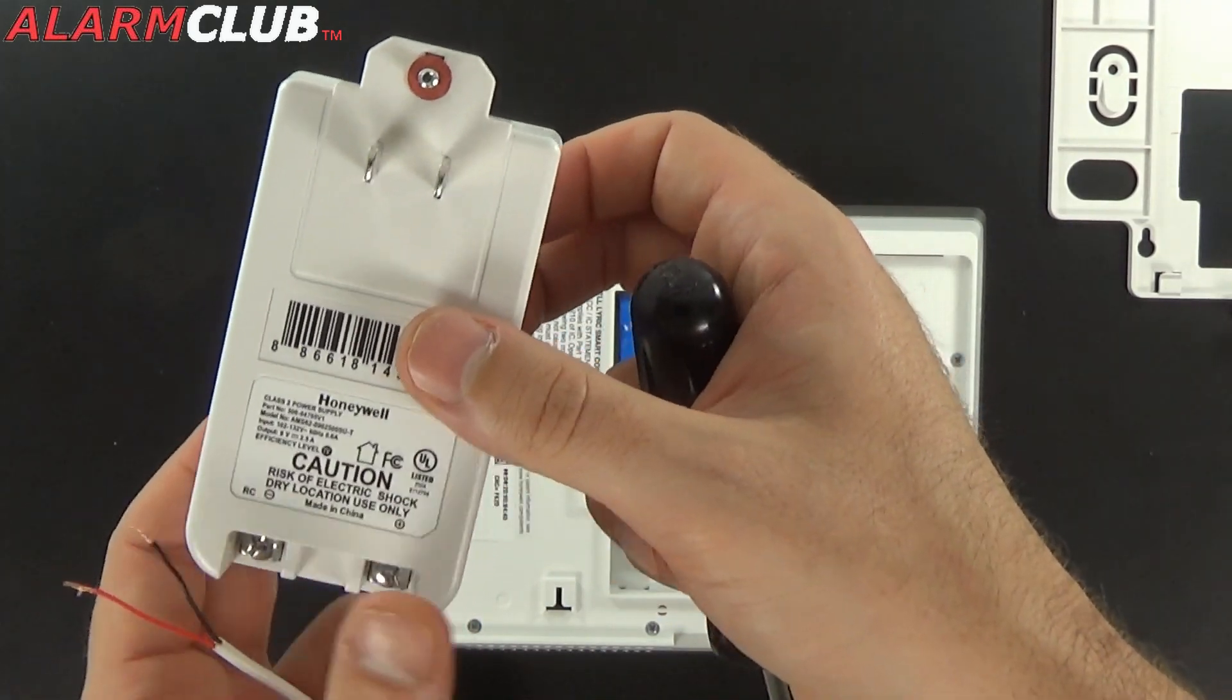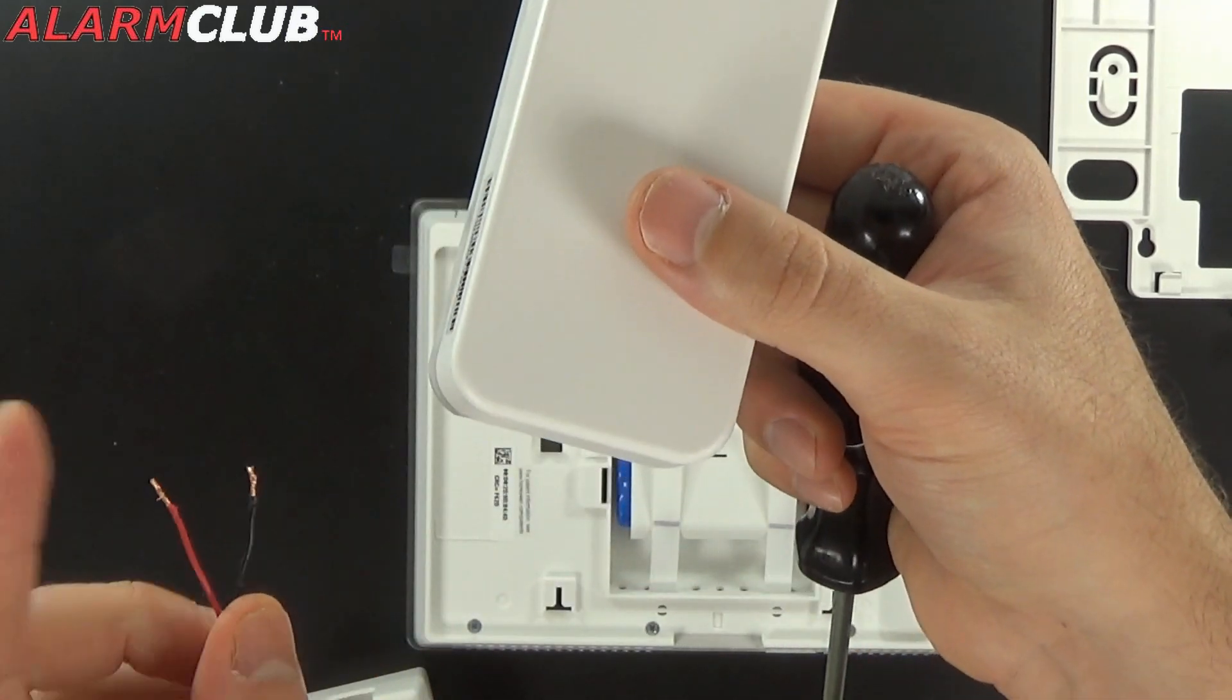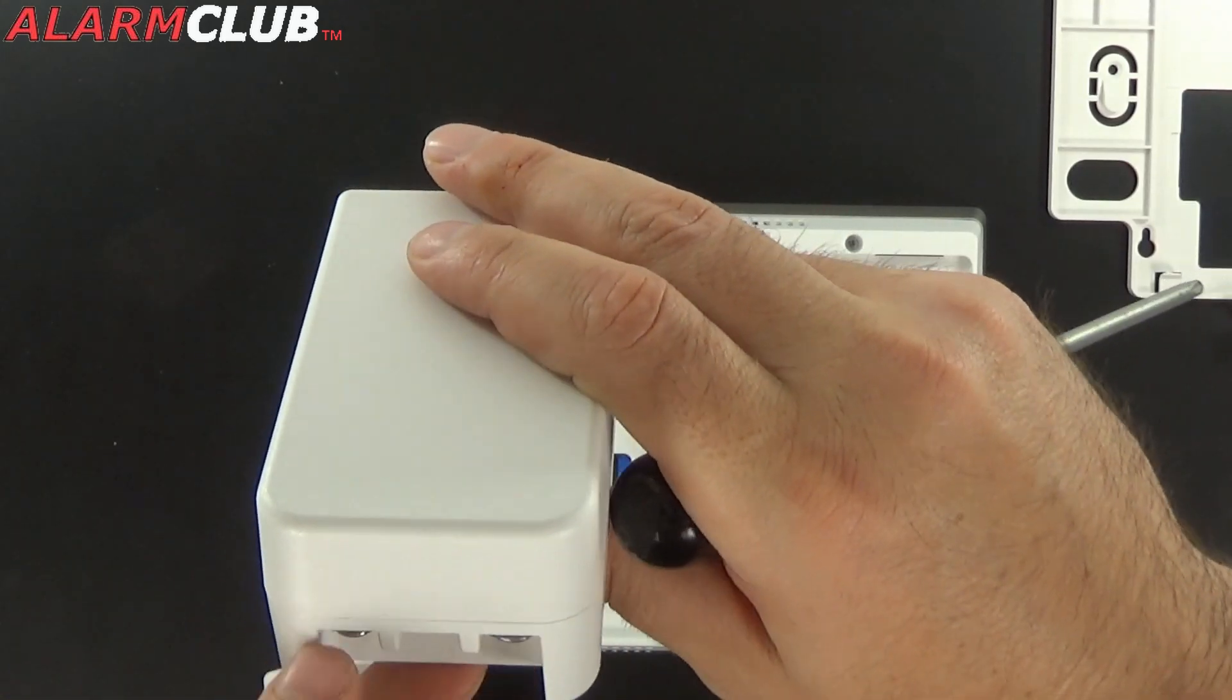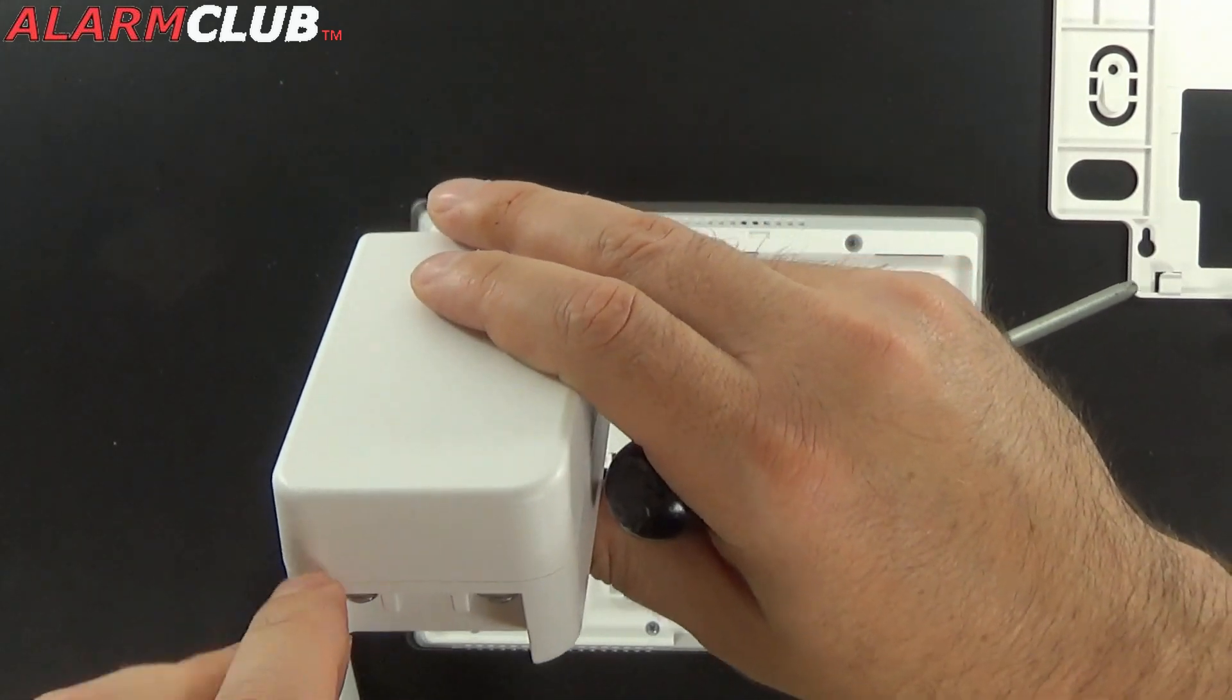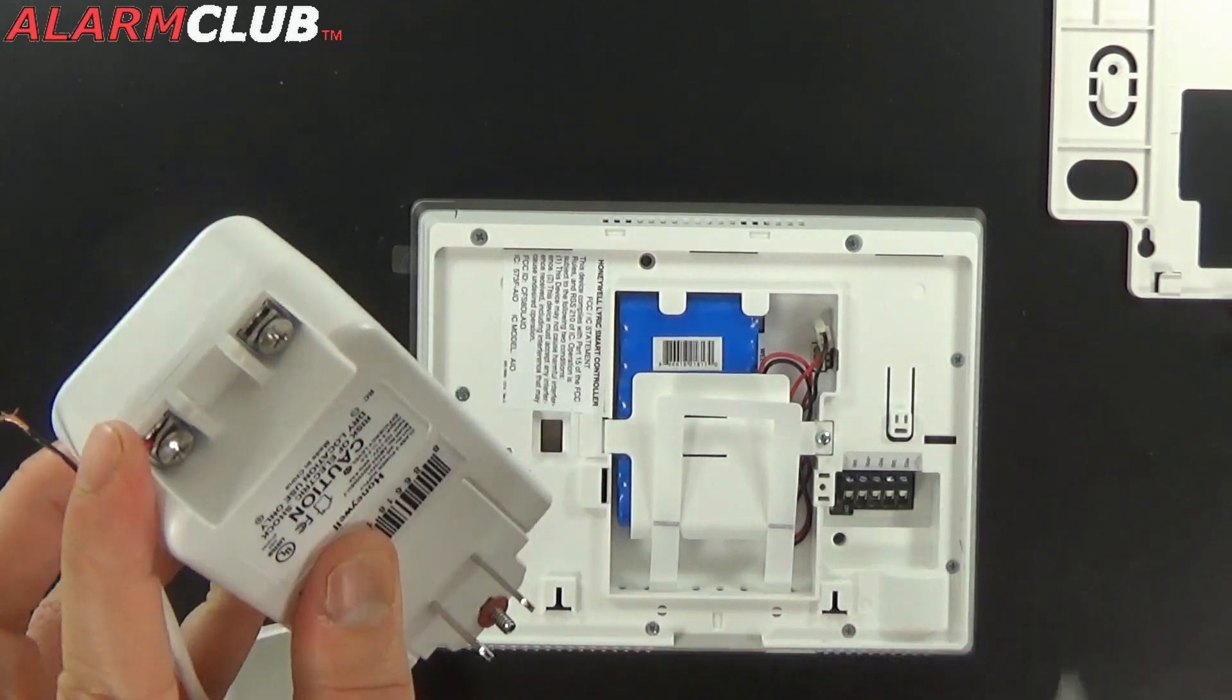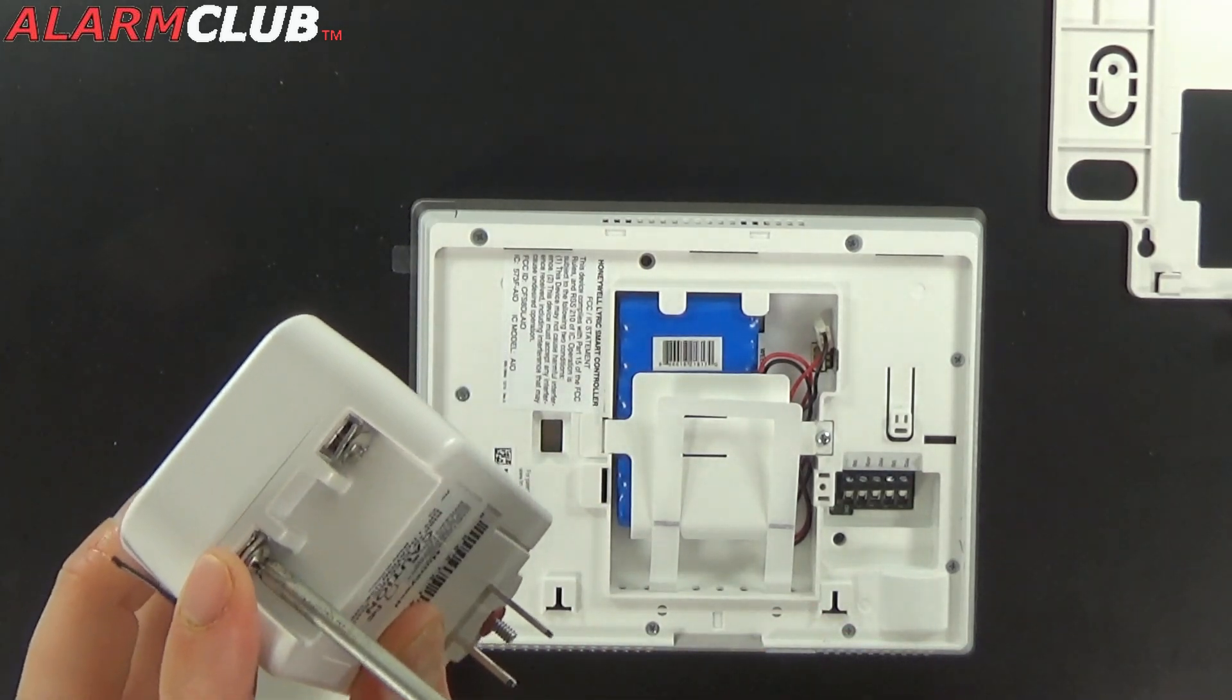And what I like to do is turn the transformer on its side like so. Meaning red will be on the left, black will be on the right. And I like these little brackets in here. You're going to be inserting the red wire. Verify red to red which we have. Go ahead and screw that down.